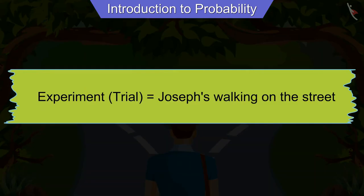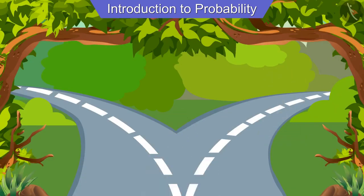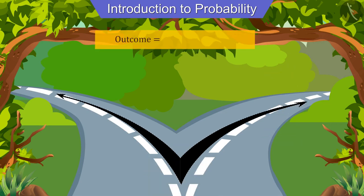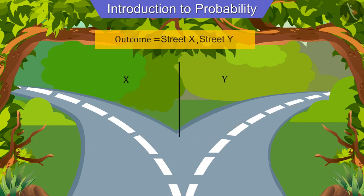Joseph's walk on the road is a trial. Now can you tell the outcome of this trial? We can say that both the roads in front of Joseph are outcomes for this event. Let's represent the road on the left as X and the road on the right as Y.